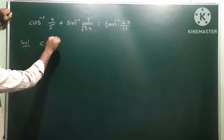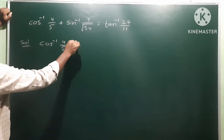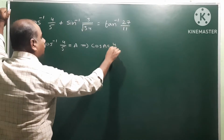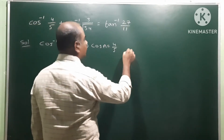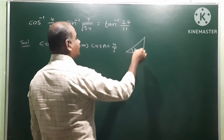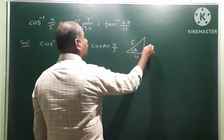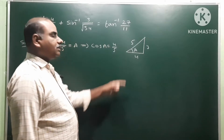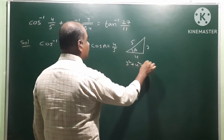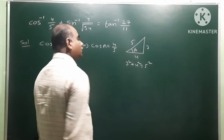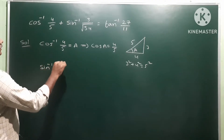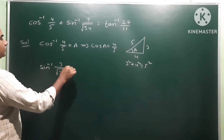Let cos inverse 4 by 5 equal to a, so cos a equals 4 by 5. Taking a right angle triangle, cos means adjacent side by hypotenuse, therefore the opposite side is 3. These are Pythagorean triples which follow Pythagoras theorem: 3 squared plus 4 squared equals 5 squared.